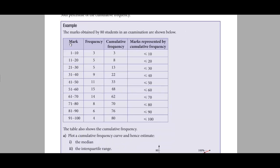This is our table here. It shows the marks obtained by 80 students in an examination. Students who got marks from 1 to 10 are 3 in number, those who achieved 11 to 20 marks are 5 students, and similarly up to 91 to 100 where there are 4 students. From this table we find the cumulative frequency.